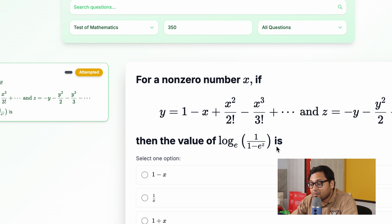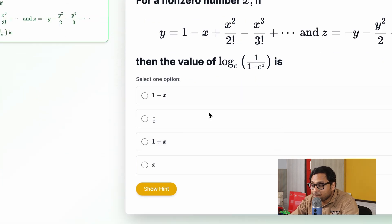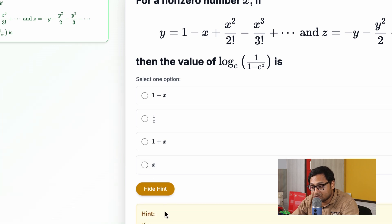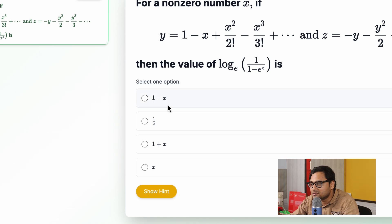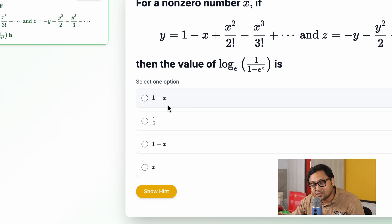What we want to find out is the value of log base e, 1 by 1 minus e to the power z. Of course, if I can think about this problem on my own, that's great. If I cannot, I can actually see a hint, which is right here, and that's the best part of this software, that it lets you try a little bit more with a small hint, and then we can try it on our own one more time. So let's do it.